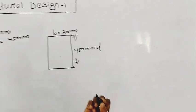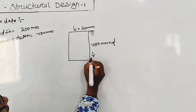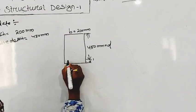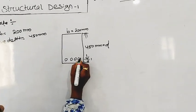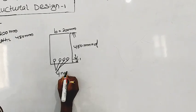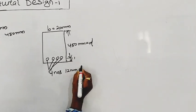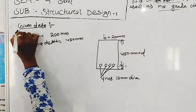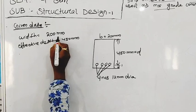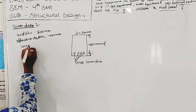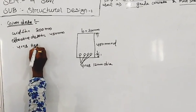Effective depth D equals 450mm. Reinforcement: 4 numbers 12mm diameter. So, width 200mm, effective depth is 450mm.